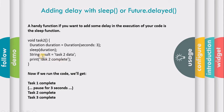We are printing a string named task two and returning a result called task two data. When you run the code, you get task one complete, then when task two is called it waits for three seconds due to the sleep function, and after that task two complete is shown, followed by task three.